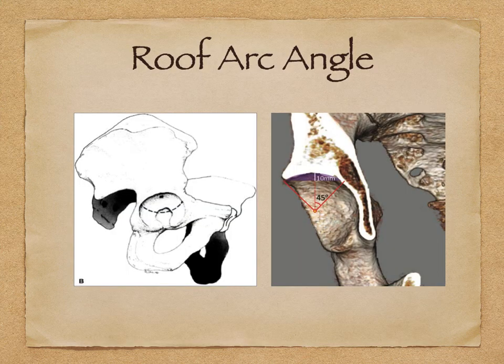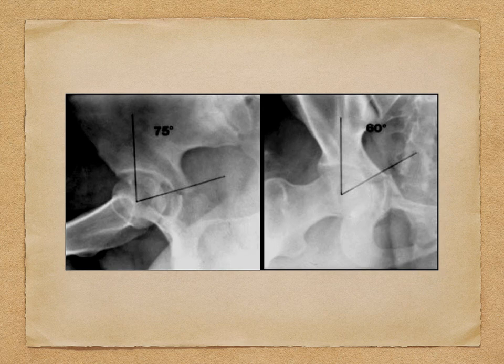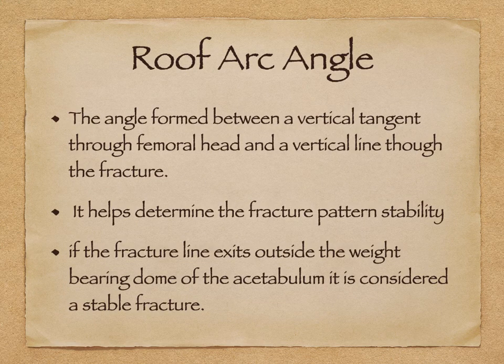An important thing when doing radiology is the roof arc angle - this is the area of bone condensation, and the angle you draw determines how stable or unstable the fracture will be. For example, in one case it is 75 degrees and in another it is 60 degrees. This is the angle formed between a vertical tangent through the femoral head and a line through the fracture. Any fracture line outside the weight-bearing dome can be considered a stable fracture.